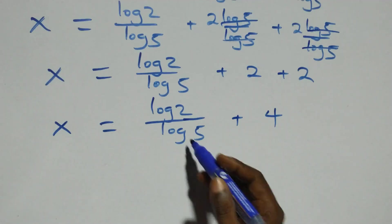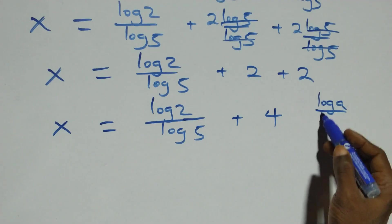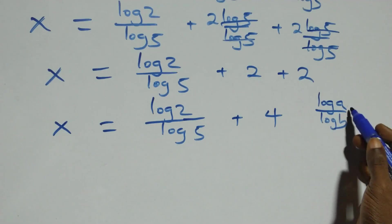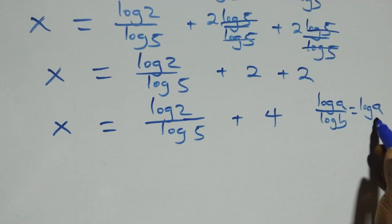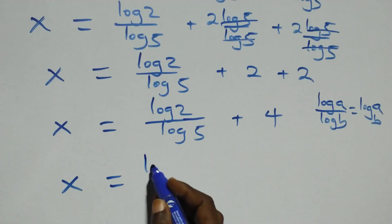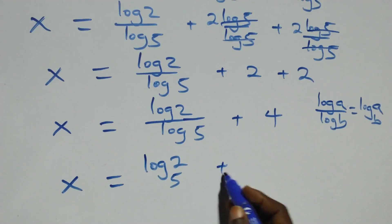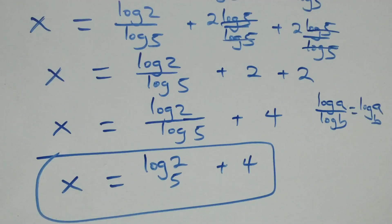We can also apply the change of base rule. When we have log 2 over log 5, this can be expressed as log base 5 of 2. Therefore x equals to log base 5 of 2 plus 4.